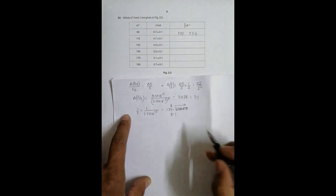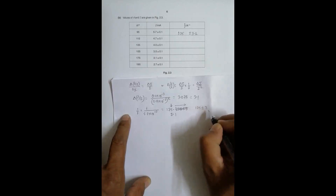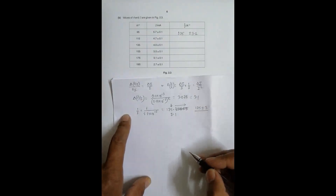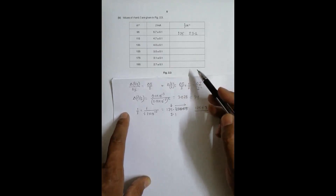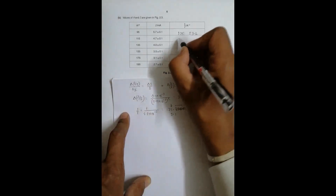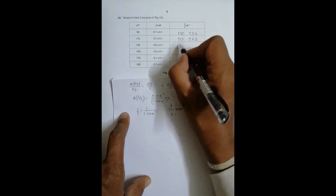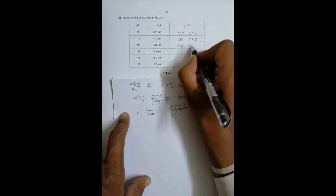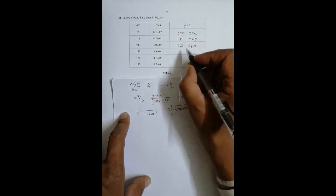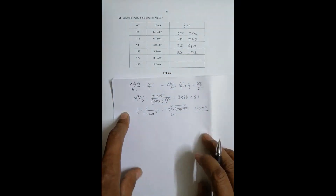If someone insists on expressing the uncertainty in only 1 SF, the first entry would be 175 ± 3. The same approach applies for the next rows. The values are: 213 ± 6.2, 250 ± 4.5 (note: I made an error earlier — this is 4.5, not 6.2, rounding to 5), and 286 ± 8.2.